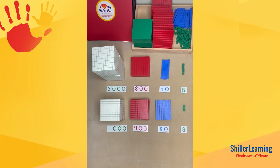We're going to take a look at a problem doing four-digit addition with exchange — that's carrying. Now before doing a problem like this, the child would have played the exchange game where they're exchanging 10 ones for a 10, 10 tens for a hundred, and 10 hundreds for a thousand, doing that both ways and getting really comfortable with exchanging out those place values.